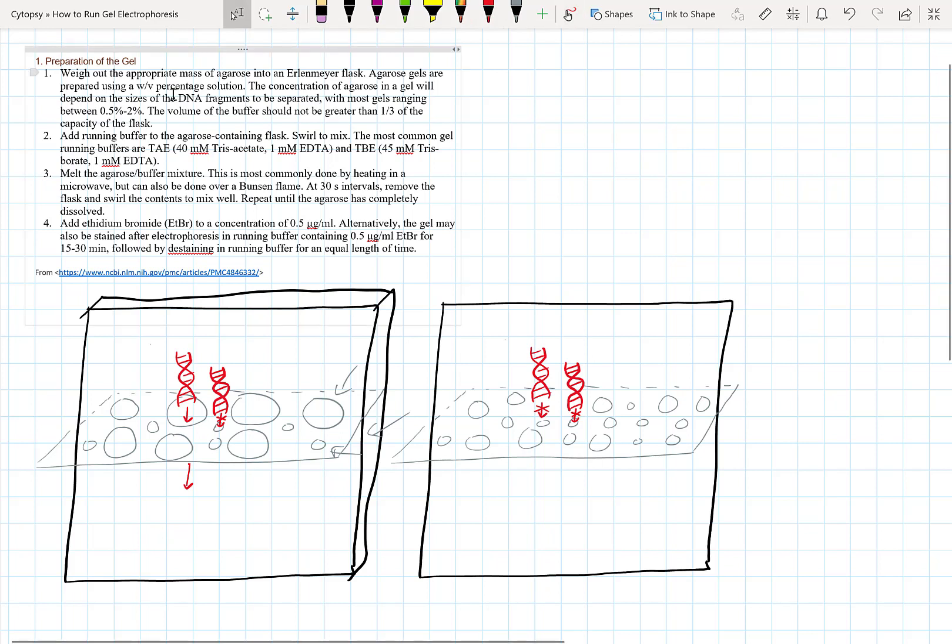So since our first step is to make that agarose solution by using a weight per volume percentage, this means that we're actually setting that porosity right in the beginning when we start preparing the gel. And the reason that you choose the porosity right in the beginning is because you already know the kinds of DNA fragments that you're going to be separating. So why not decide it upfront, make a gel just to separate out the DNA sizes that you're interested in, and then go through the rest of the steps.